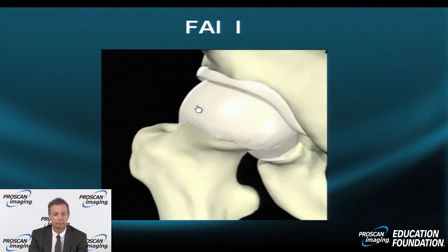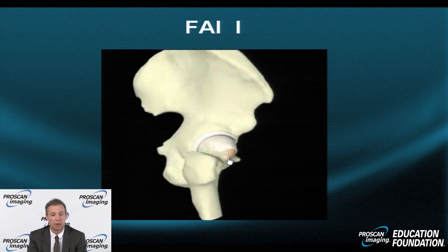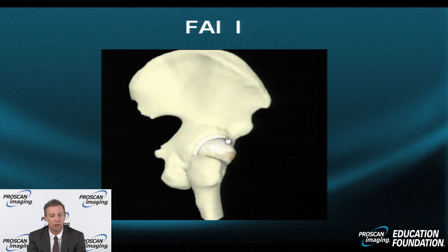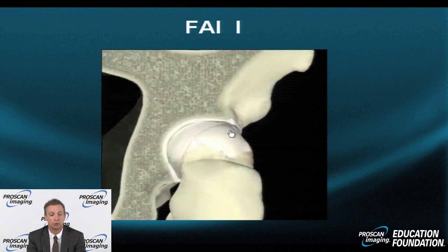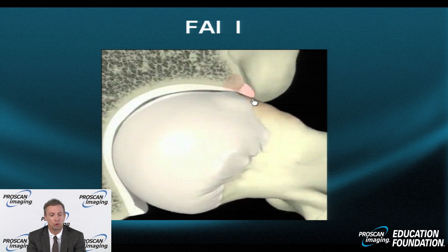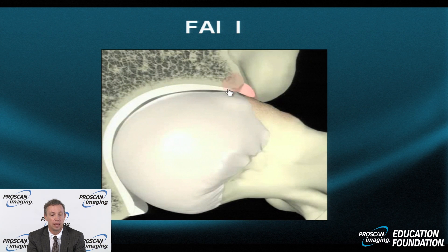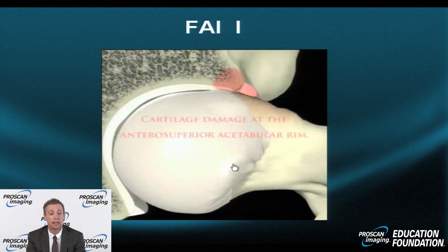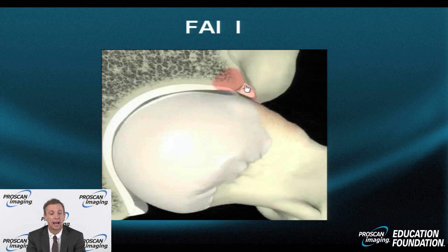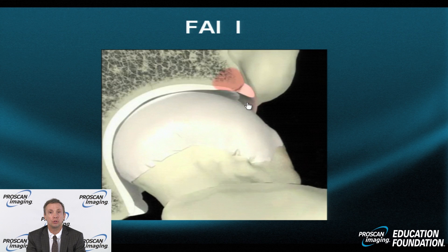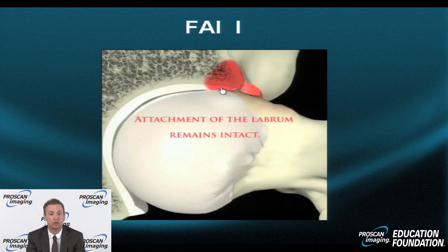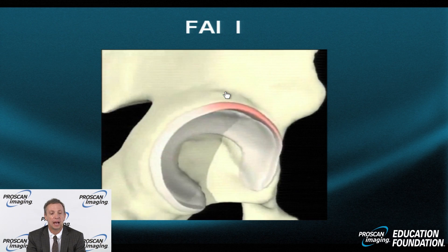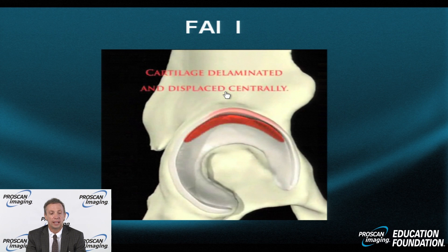Let's take a dynamic look at FAI. In cam type impingement, a bump has formed at the head-neck junction. When the patient goes into the flexion position, the bump rides from the outside in against the front of the labrum and hyaline cartilage, producing an abrasion and erosion or tear. At high resolution, we can see the bump contacting the labrum and impacting the bone and cartilage. Over time, these shear, crack, and break — producing chondro-osseous separation with hyaline cartilaginous abrasion that grows with repetitive movement.